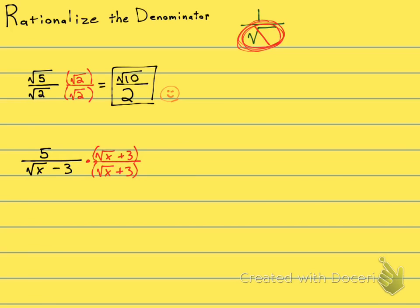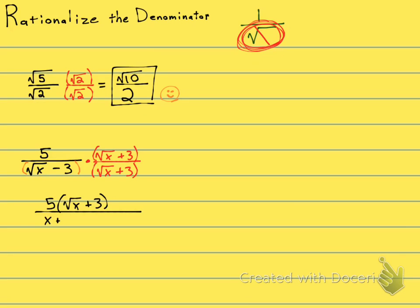It has to be the same thing in the numerator and the denominator. When I multiply this denominator, I will need to FOIL. The numerator is just going to be 5 times the square root of x plus 3. I don't necessarily need to distribute the numerator, but I do need to distribute the denominator to see how that radical goes away. To FOIL the denominator: the first two — square root of x times square root of x — is just x, no more radical. The outer two is square root of x times 3, which is plus 3 square roots of x.